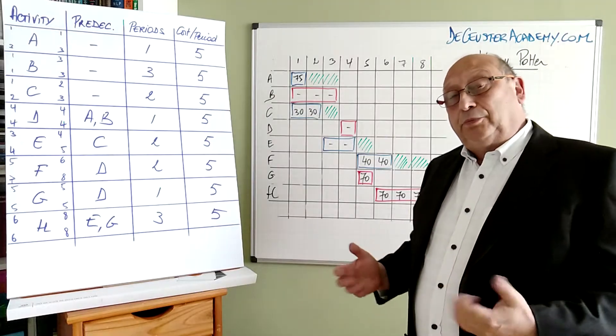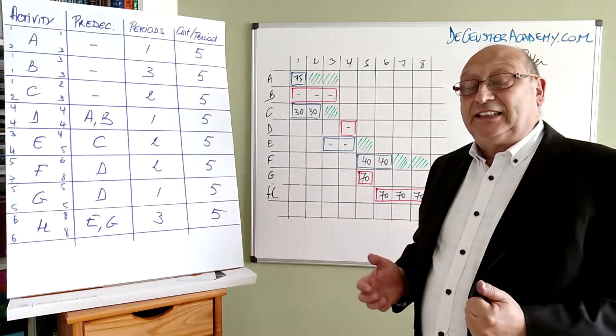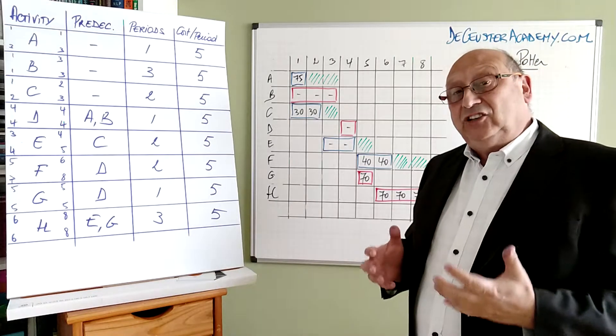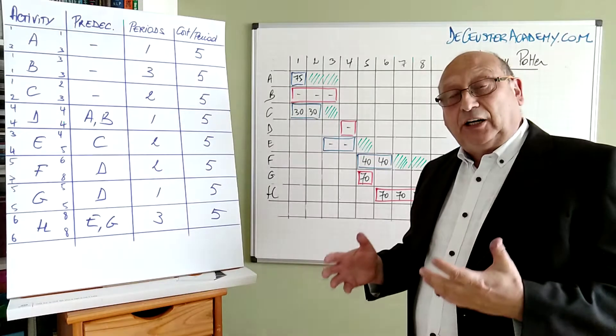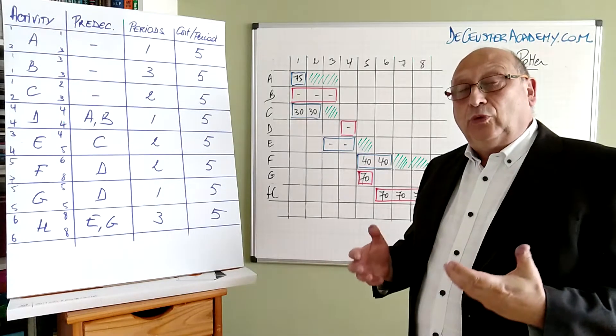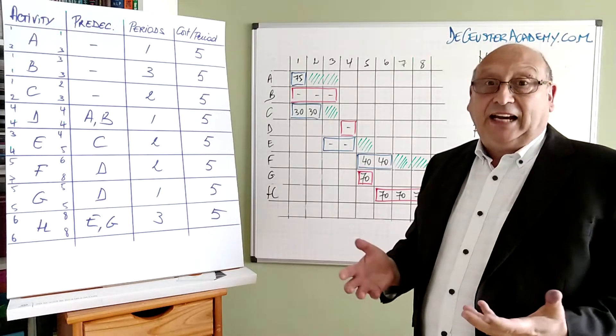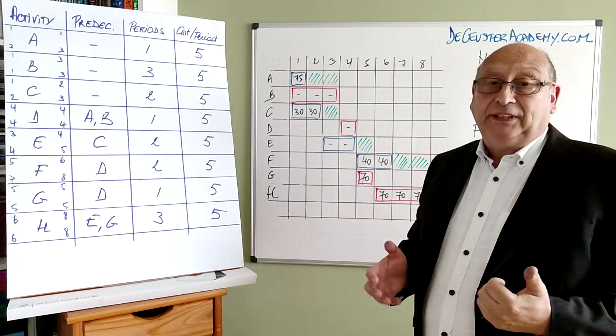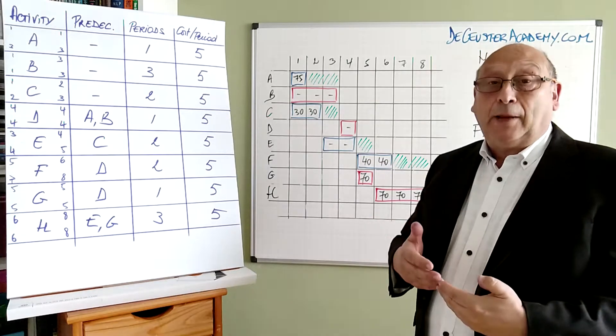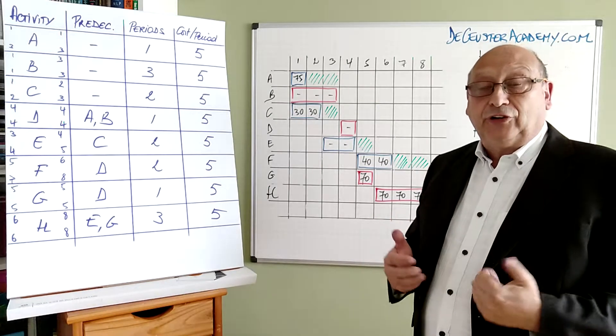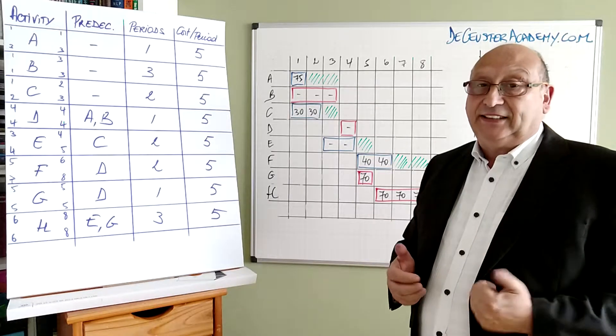During the project planning, we will allocate resources to different activities. And the moment we have the Gantt chart, we see where those activities are planned and also when the people who are working on these activities are active. Now what can happen is that some activities are in fact overlapping and that one person is dealing with more than one activity at the same time.